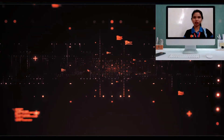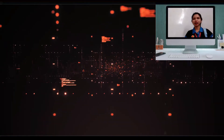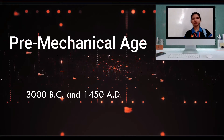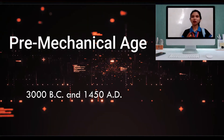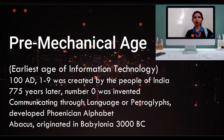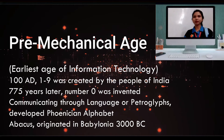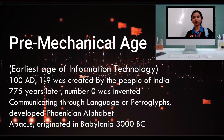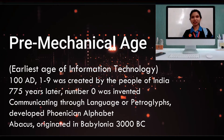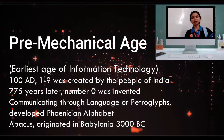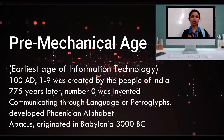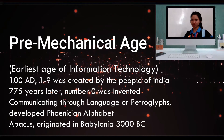The first age of information technology is the pre-mechanical age, between 3000 BC and 1450 AD. It was the earliest age of information technology. Around 180 AD, the people of India discovered the numbers 1 to 9. Then 775 years later, the number 0 was invented. Communicating was through language or picture glyphs. They also developed the Phoenician alphabet. At this age, they also discovered the Abacus, which is the ancestor of our computers today, and also the calculator.